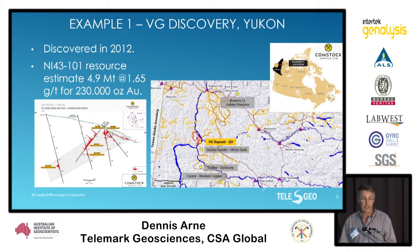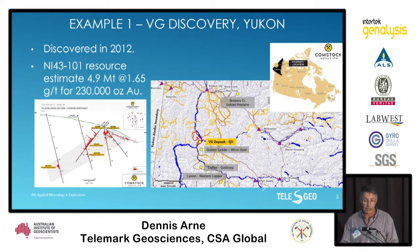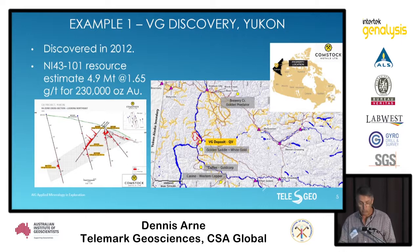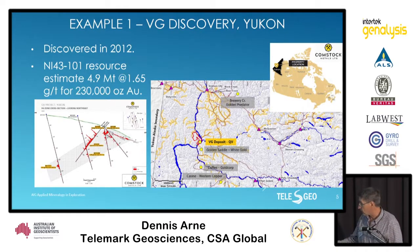Looking at the BG discovery in the Yukon first — this was discovered in 2012, it has a small resource associated with it. It's in the area of the Golden Saddle deposit, controlled by White Gold, and the Coffee deposit, which is Goldcorp — you could put Newmont in there now. We're going to look at one of the discovery drill holes, drill hole number four.